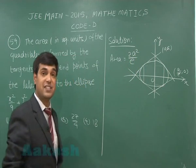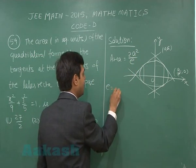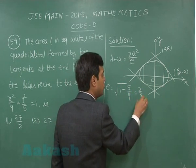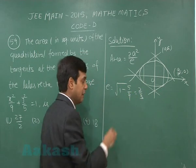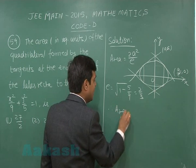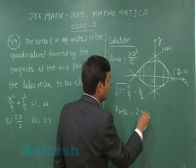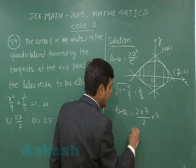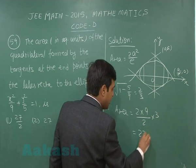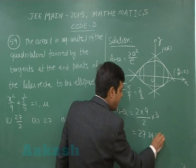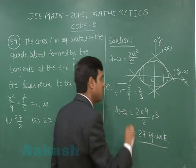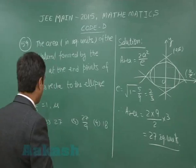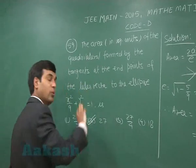We need to find the eccentricity: e = √(1 − 5/9) = 2/3. Therefore, the required area is 2 × 9 divided by (2/3), giving 27 square units. In this manner we can find the area directly. From the given options, the correct answer is option number 2.